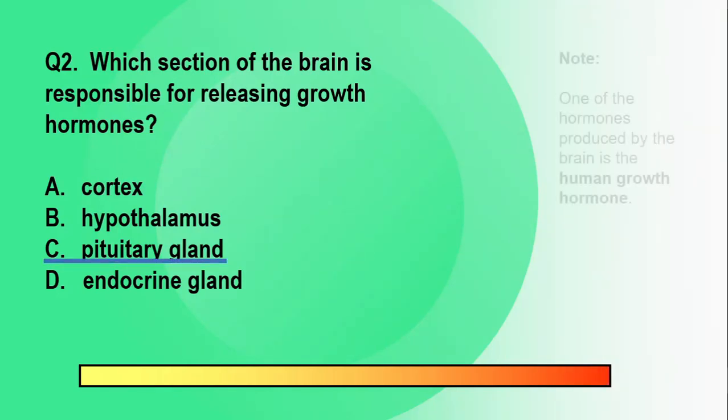The pituitary gland is a structure in the brain that produces different types of specialized hormones, including growth hormone, also referred to as human growth hormone or HGH. This actually influences our height and helps build bones and muscles.